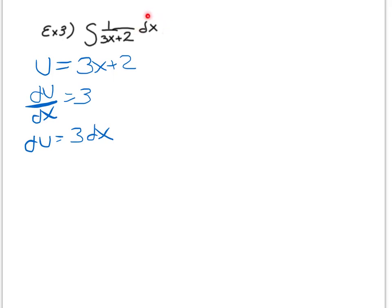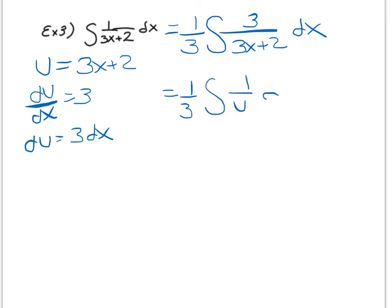So if you remember from previous concepts we've talked about, I can get that 3 in there as long as I put a 1 third out front also. So I'm going to first rewrite my integral as 1 third times the integral of 3 over 3x plus 2 dx, thus allowing me to now go ahead and substitute du in for the 3 dx and u in for the 3x plus 2, thus giving me 1 third times the integral of 1 over u du.